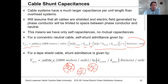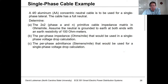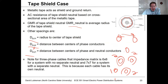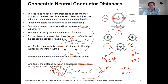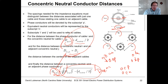For the tape shield cable there's a similar expression for the admittance. We're going to use exactly the same relationships as for overhead lines — the only difference is that instead of overhead distances, we use equivalent distance terms based on corrections for concentric neutral or tape shield geometry.